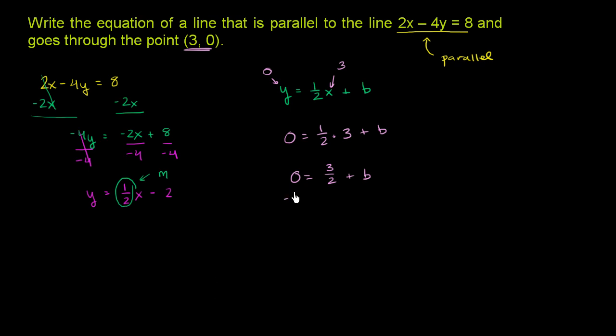Subtract 3 halves from both sides and we get negative 3 halves equals b, or b equals negative 3 halves.